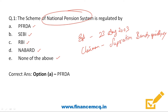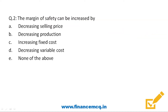Moving on, next question: the margin of safety can be increased by — option A: decreasing selling price, option B: decreasing production, option C: increasing fixed cost, option D: decreasing variable cost, and last option: none of the above.